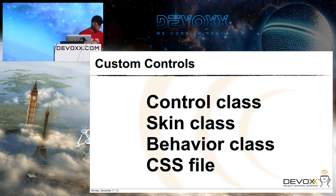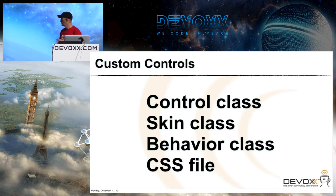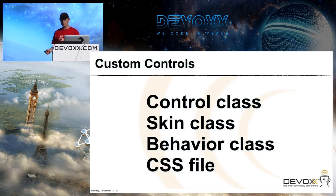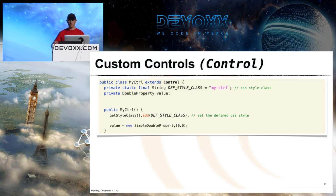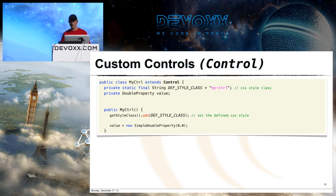Now to my main topic: custom controls. Custom controls are made of four things: a control class, a skin class, a behavior, and a CSS file. In JavaFX everything is styled with CSS — not like Swing's UI delegates with all styling in code. Now you can use a CSS file like in HTML5 to style your control. Each custom control can have its own CSS file. Standard controls use the so-called Caspian CSS.